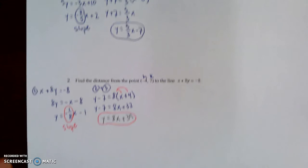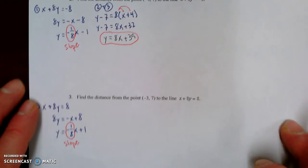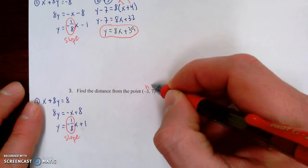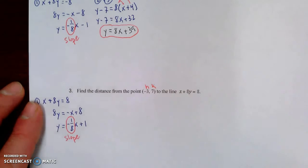All right, so try out the last one on your own. Our original slope was negative one-eighth. Our point is going to be (h, k), so see what you can do. Pause the video for a moment. Try it out on your own.